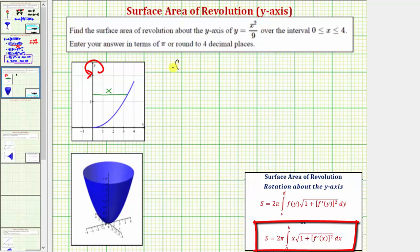So we know that f of x equals x squared divided by 9, and therefore f prime of x is equal to 2 ninths x, and we already know the interval for x is from 0 to 4, so we have all the information we need. The surface area is equal to 2 pi times the integral from 0 to 4 of x times the square root of 1 plus f prime of x squared. That would be the square of 2 ninths x dx.